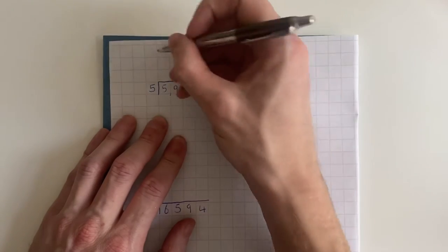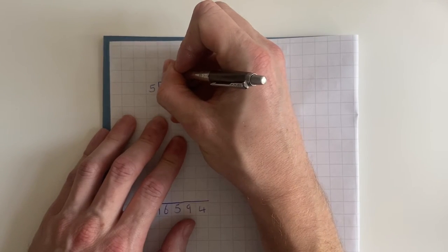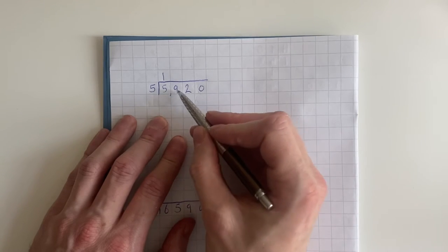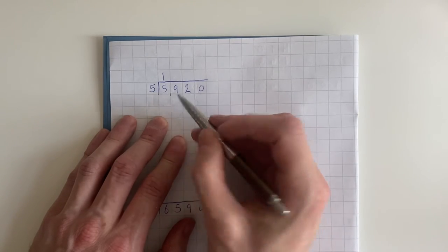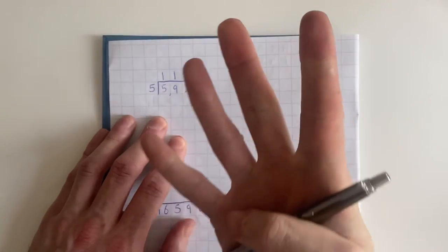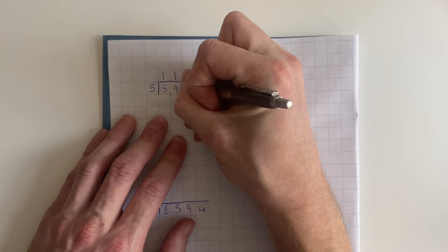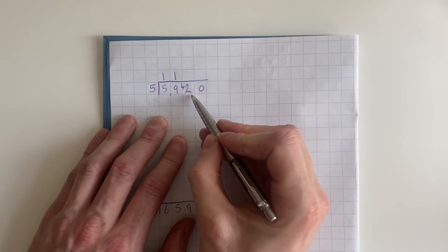So how many fives go into five? Five goes into five once, five goes into five one time and it has four remaining. So now we've got 42.